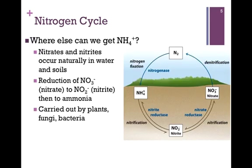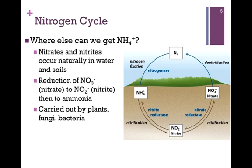Where else can we get the ammonia that we need? There are nitrates and nitrites that occur naturally in water and soils, and this is one form of a nitrogen-containing compound. There are certain organisms in the soil that can reduce nitrates and nitrites to form ammonia. This is carried out by plants, fungi, and bacteria. In our nitrogen cycle illustrated here, nitrate reductases convert nitrate to nitrite. Nitrite can then be further reduced to ammonia.